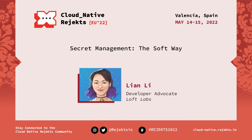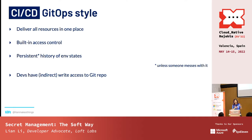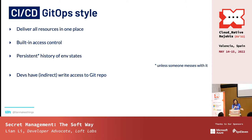If your developer wants to deliver their application, they have to have write access to the Git repository in some way. If they have write access, they will have read access. And then we are back at the beginning of the problem: if all the resources are in the same place in your Git repository, that means they will see the secrets, which are, as we now know, not encrypted.